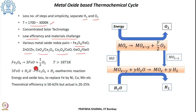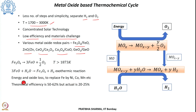Among the well-studied metal oxide redox pairs is the iron oxide pair, where Fe₃O₄ converts into either FeO or elemental iron and produces oxygen at a high temperature of 1873 Kelvin. FeO reacts with H₂O to produce Fe₃O₄ and hydrogen in a slightly exothermic reaction. Major issues include energy losses and materials-related losses due to the very high temperature. Possible variations include replacing iron with zinc, nickel, cobalt, or manganese. The theoretical efficiency is 50–62%, but actual efficiency is restricted to 20–25% due to losses.